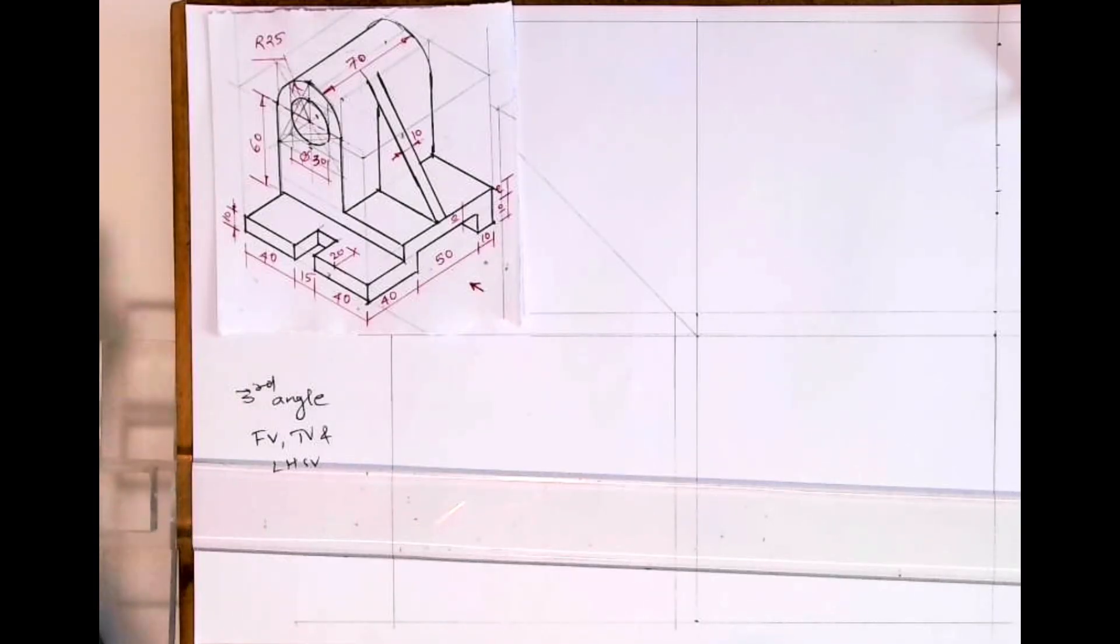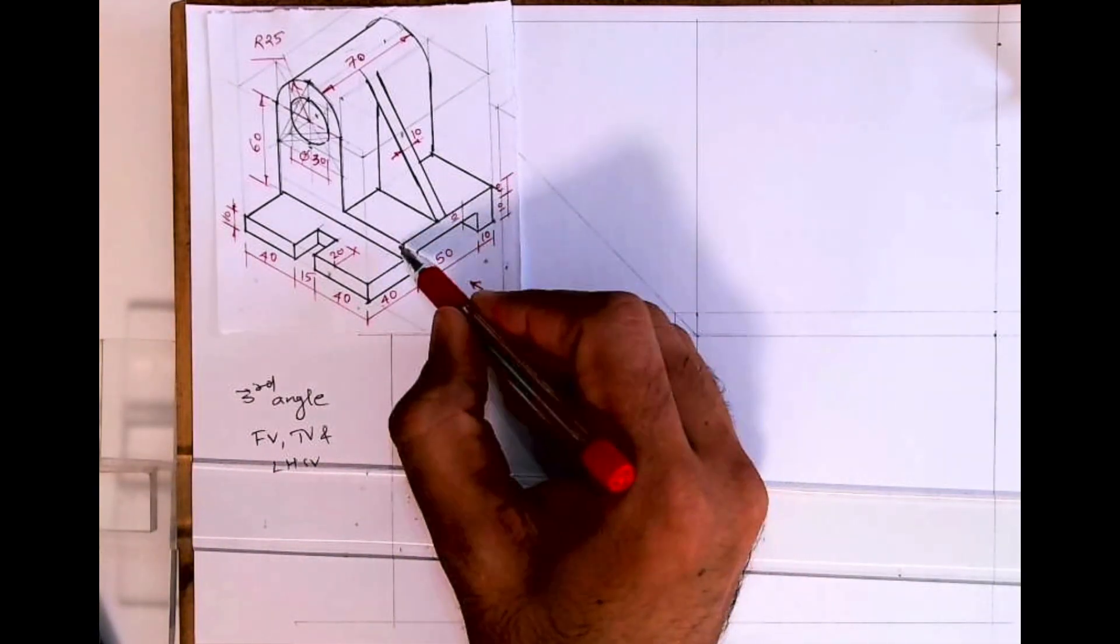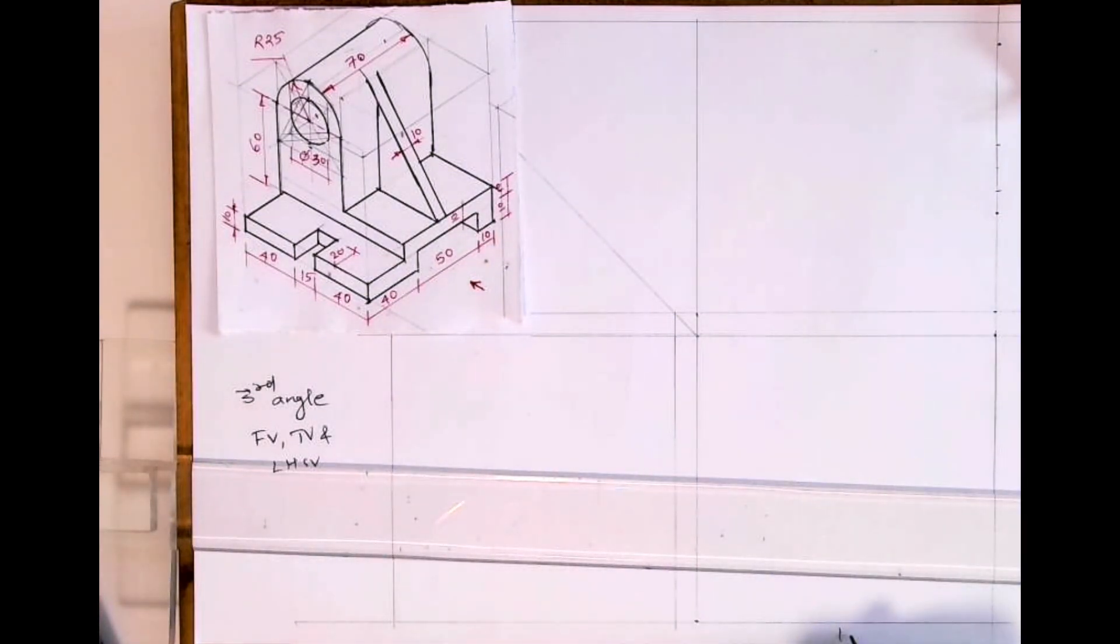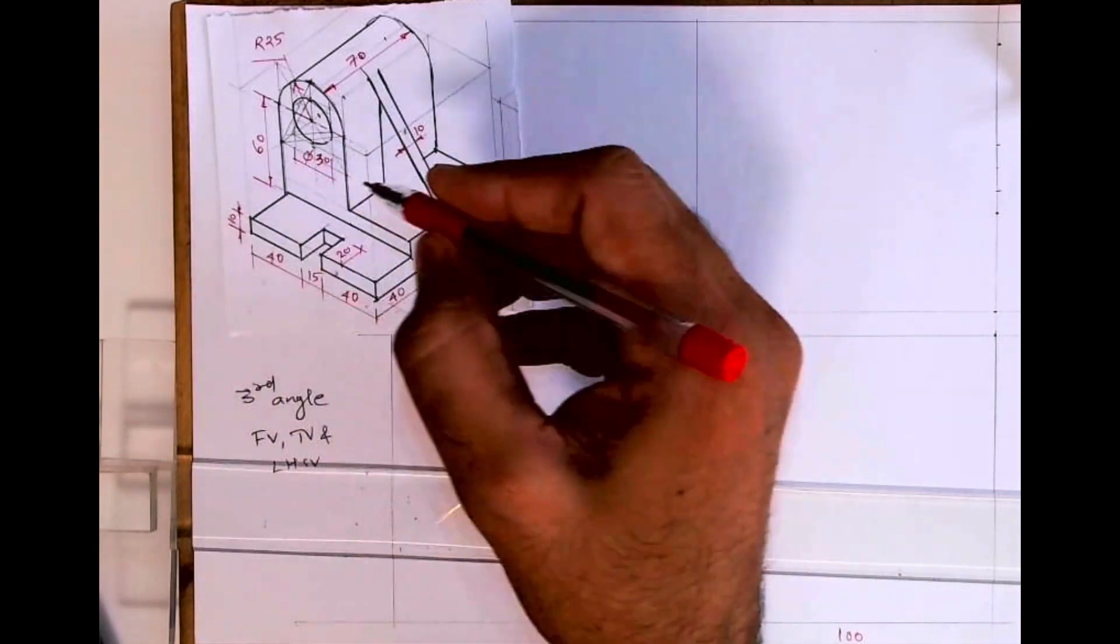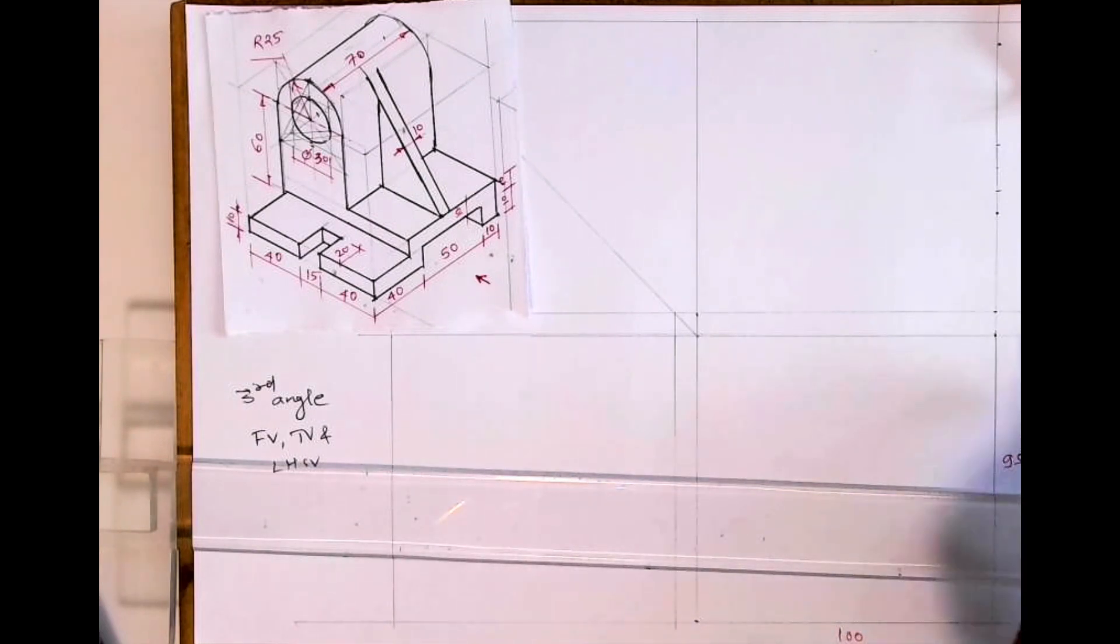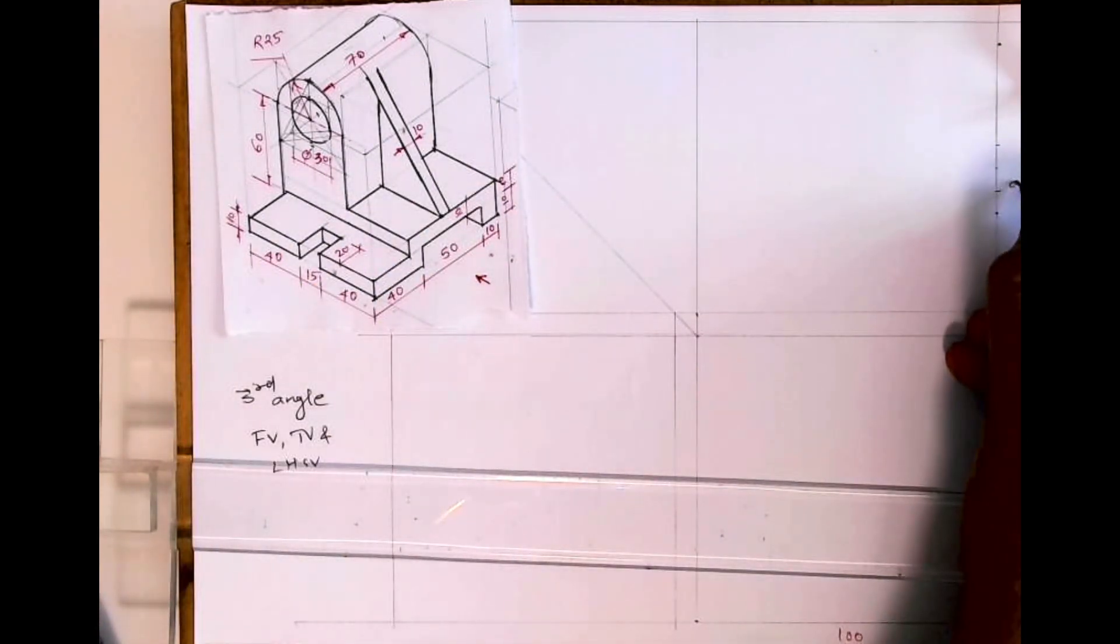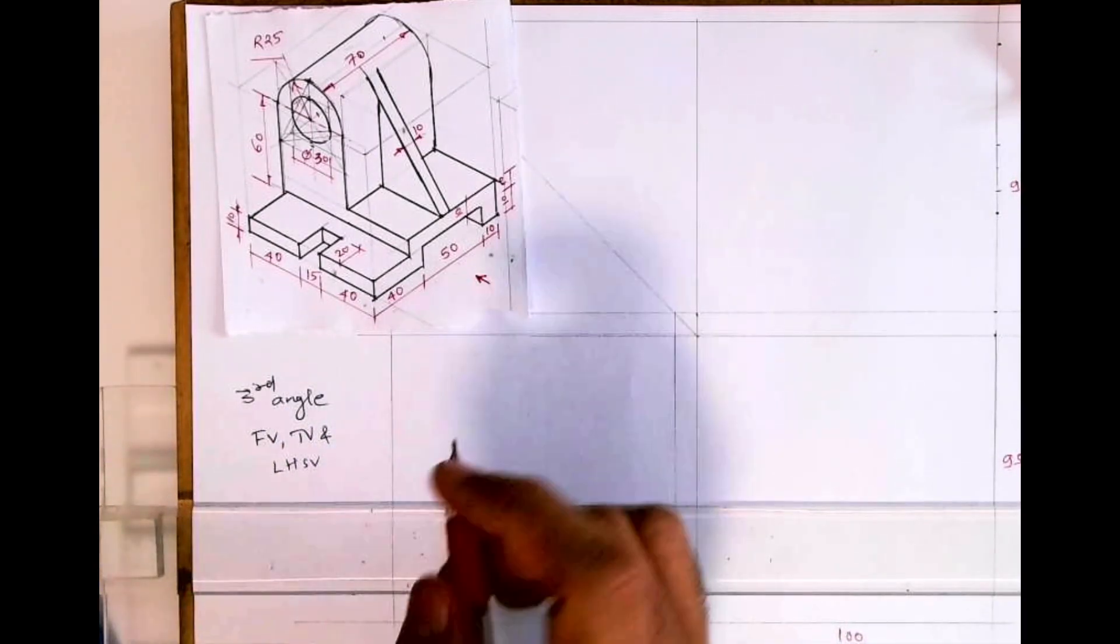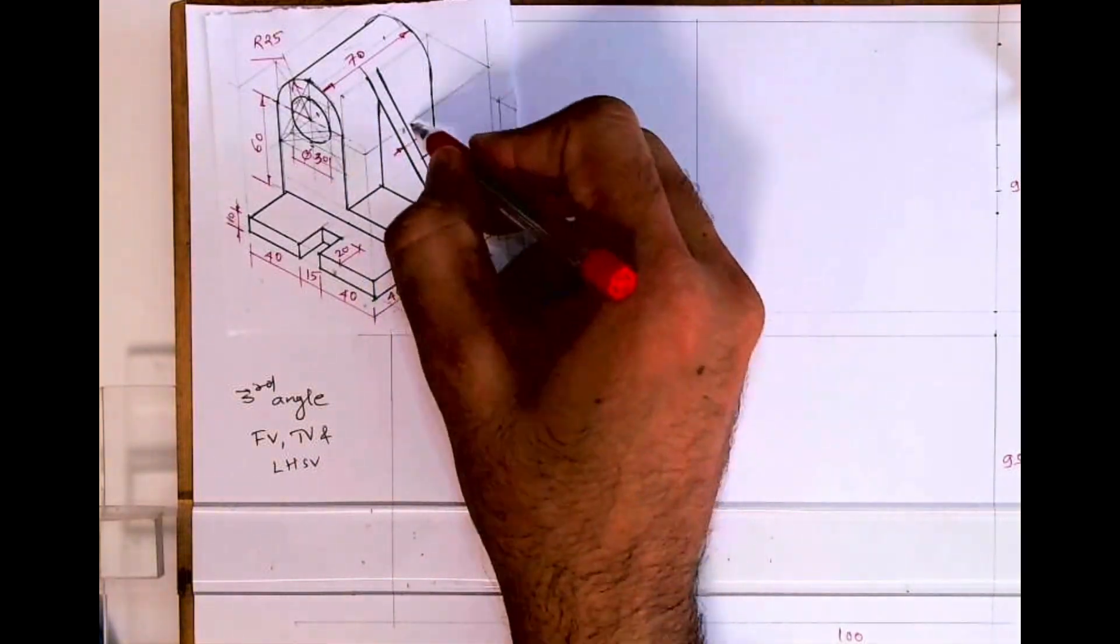Welcome to technical drawing. Today we'll see this sum in third angle. We have to draw front view length 100, height is 10 plus 60 plus 25 equals 95, and width is 40 plus 15 plus 40, which is also 95. So we'll start in front view. You will see this part, this part, the slope.